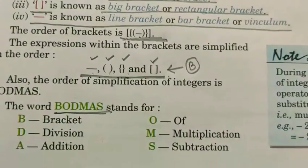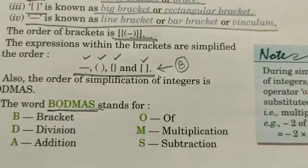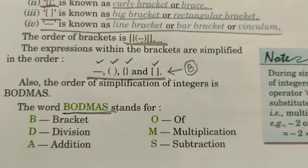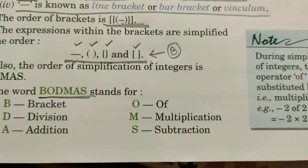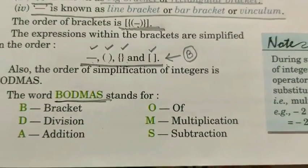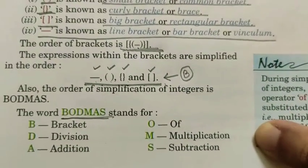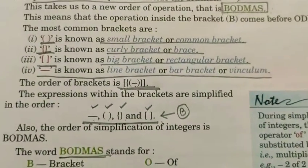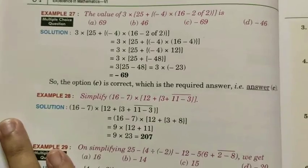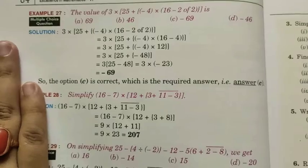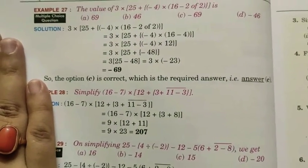So the full explanation of BODMAS: B for Bracket, O for Off, D for Division, M for Multiplication, A for Addition, and S for Subtraction. If there is any simplification, we first check for any bracket and do the bracket operation first, then Off, then Division, then Multiplication, then Addition, and at last we perform the operation of Subtraction. We are doing the operations using brackets and the other terms to simplify expressions.